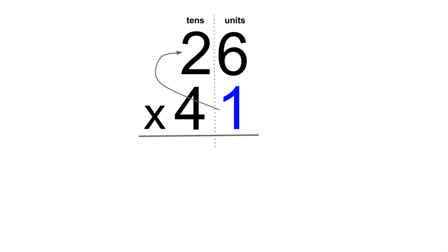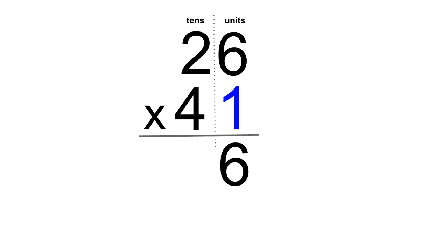So let's carry out the steps mentioned. 1 times 6 equals 6 — place the answer in the units column. Next, 1 times 2 is 2 — place the answer in the tens column.